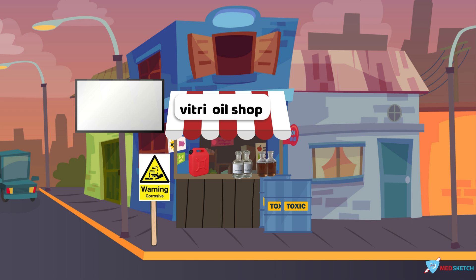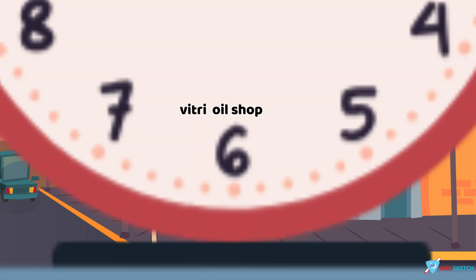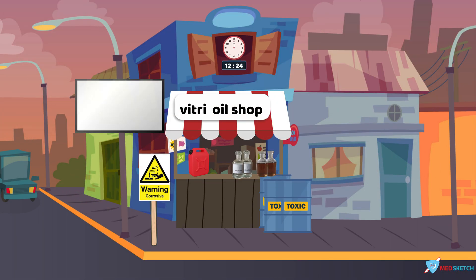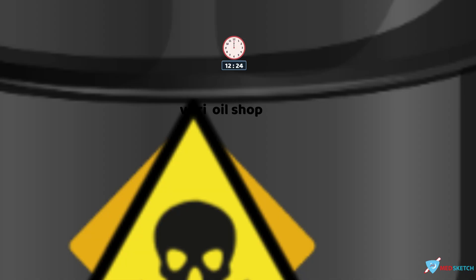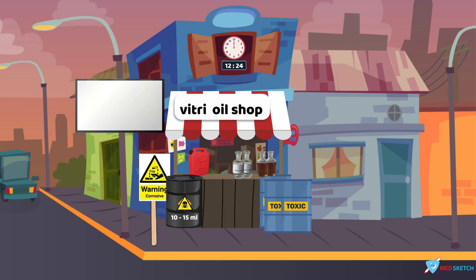The fatal period of H₂SO₄ is represented by the clock above the shop, stuck at 12:24, which represents a range of 12 to 24 hours. The fatal dose is represented by a drum sitting beside the shop with the label '10 to 15 ml', so 10 to 15 ml is the fatal dose of H₂SO₄.